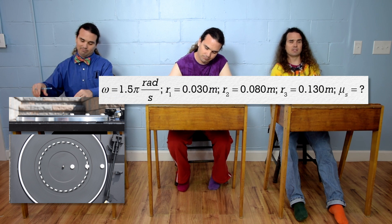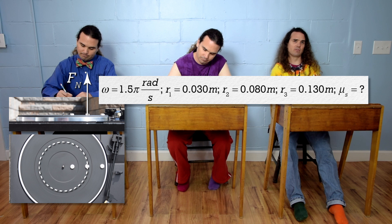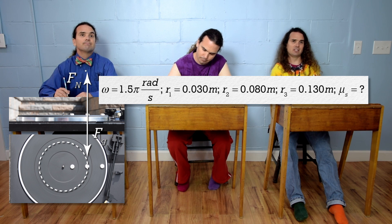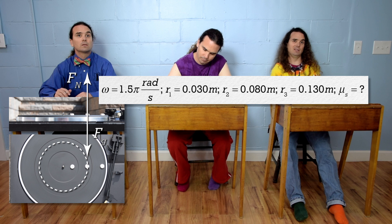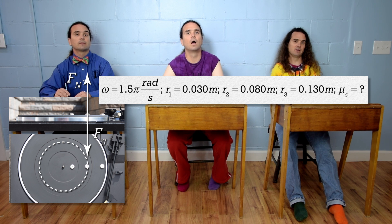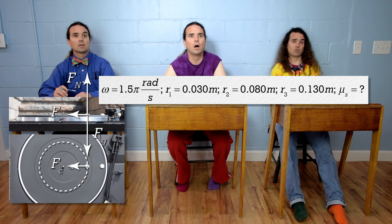The force normal is up, the force of gravity is down, and there has to be a force pulling the mints in toward the center of the record player, so that is the centripetal force.